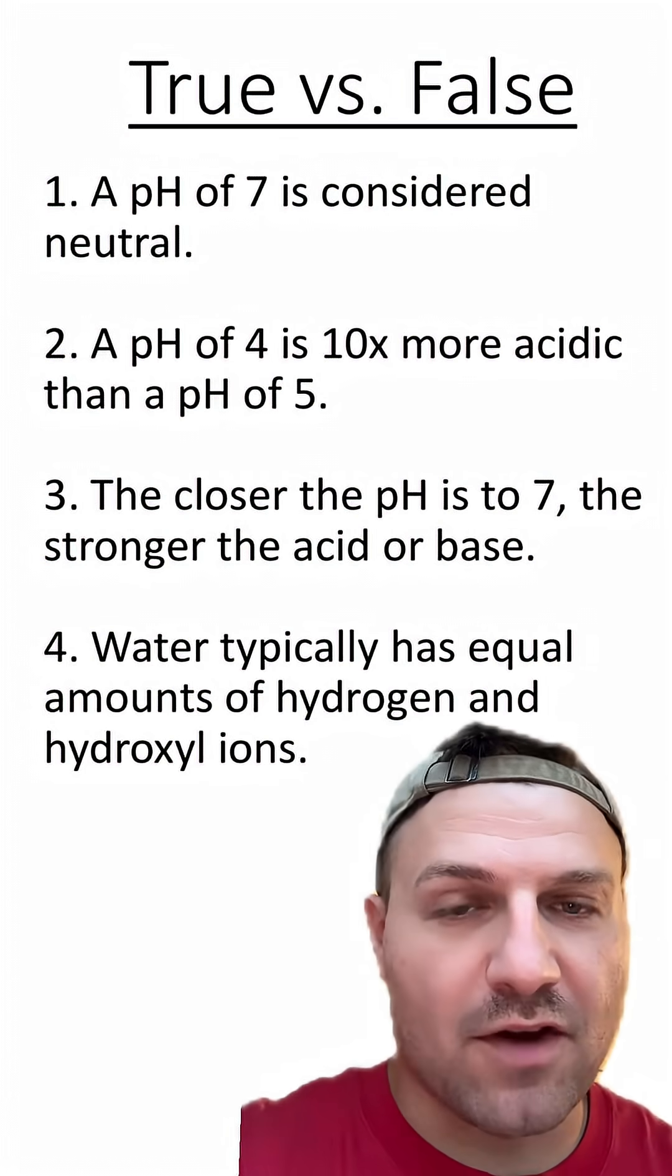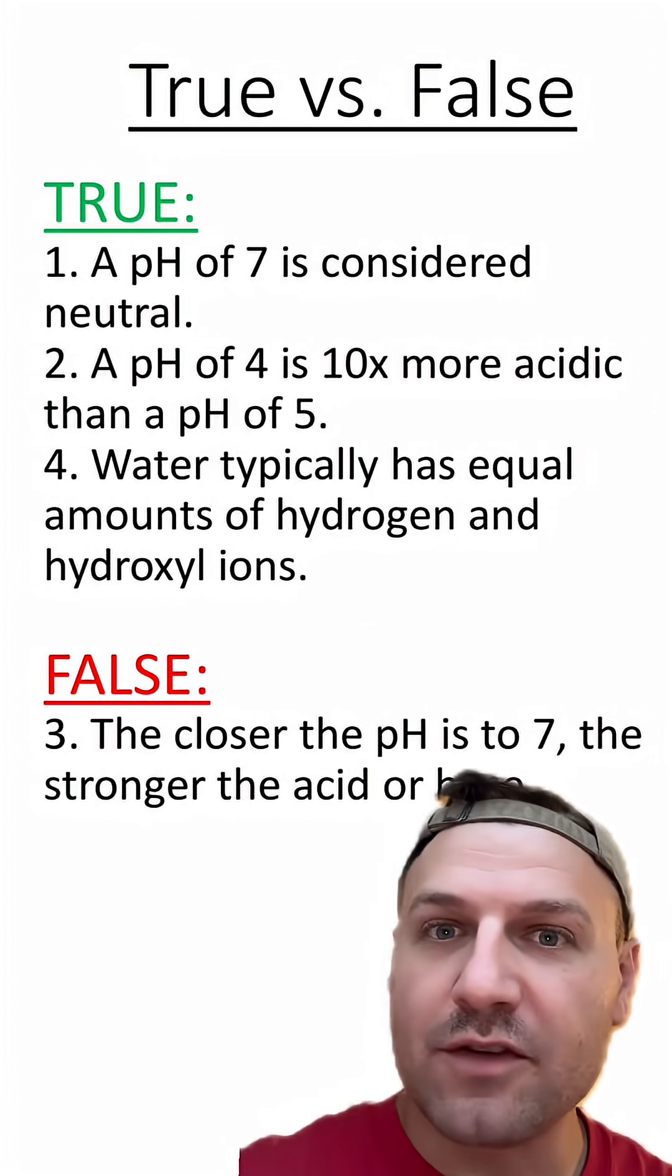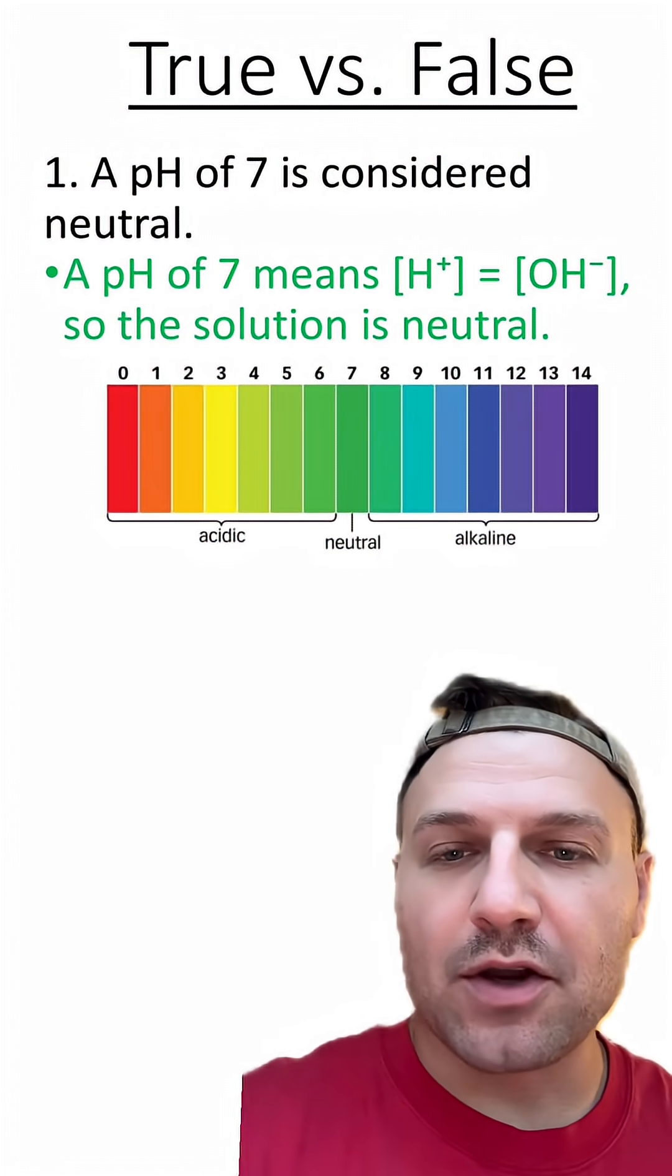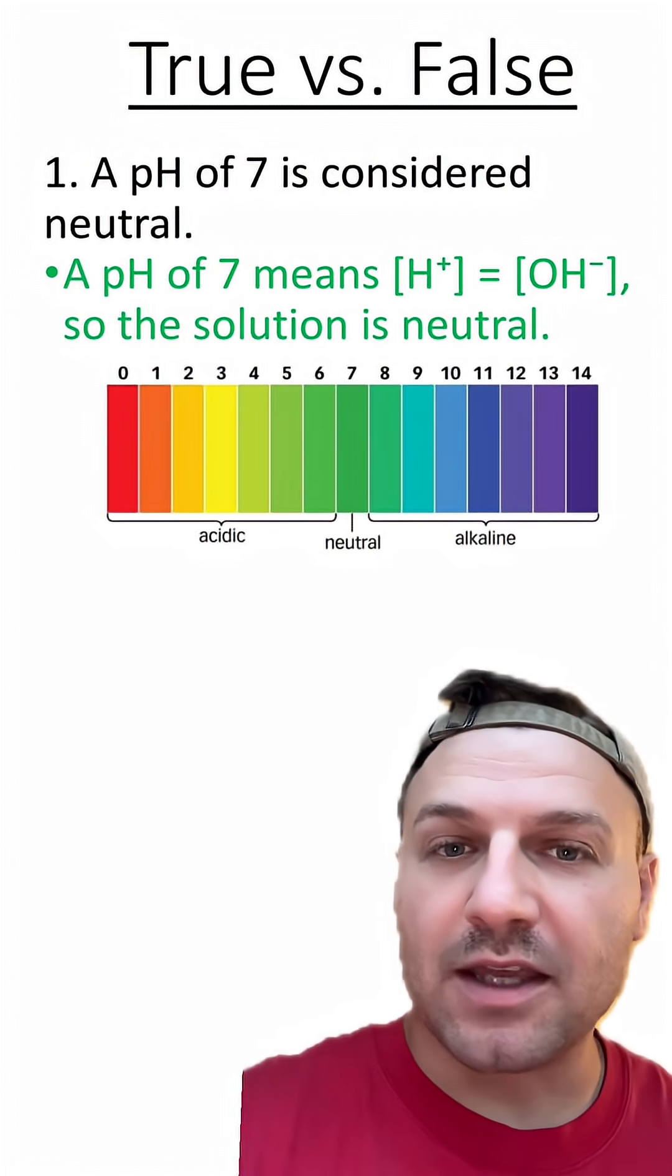So again, only one of those is false. Which one is it? Numbers 1, 2, and 4 are true, while number three is false. Number one is true because the pH scale goes from 0 to 14, with 7 being in the middle and neutral.